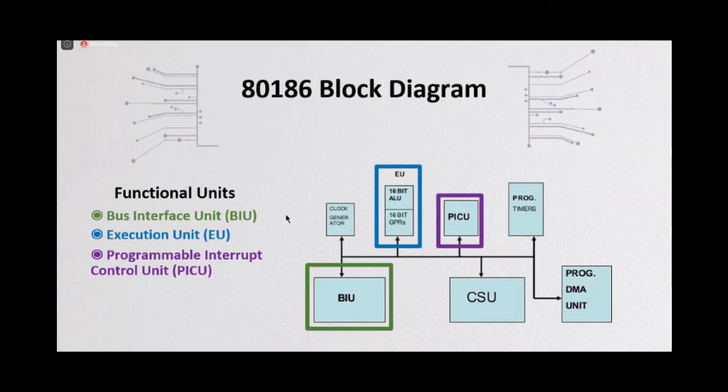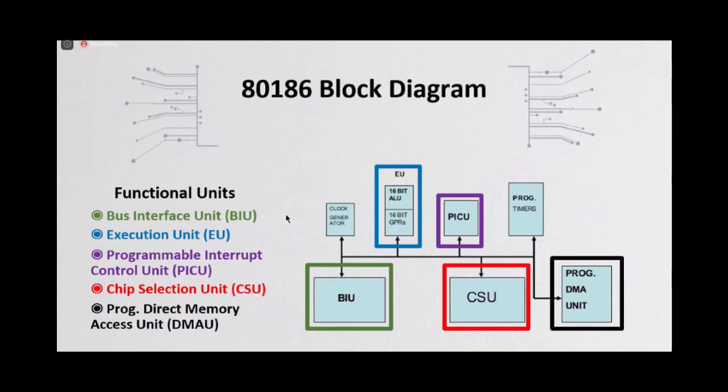Then the second one is chip selection unit, which is a built-in programmable memory and input-output decoder. Then the third one is programmable direct memory access unit. So it has some DMA channels. Each channel can transfer data between memory locations, between memory and input-output, or between input-output devices.